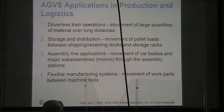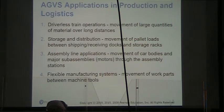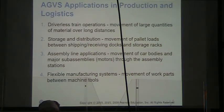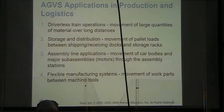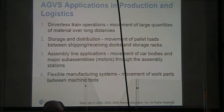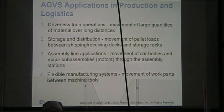AGV applications include: driverless train operations for large quantities of material over long distances, much like a commercial train. Storage and distribution — moving pallet loads between shipping and receiving, storage, and warehouse. Assembly line applications — moving car bodies or major sub-assemblies through the plant. And flexible manufacturing — moving parts between machine tools.